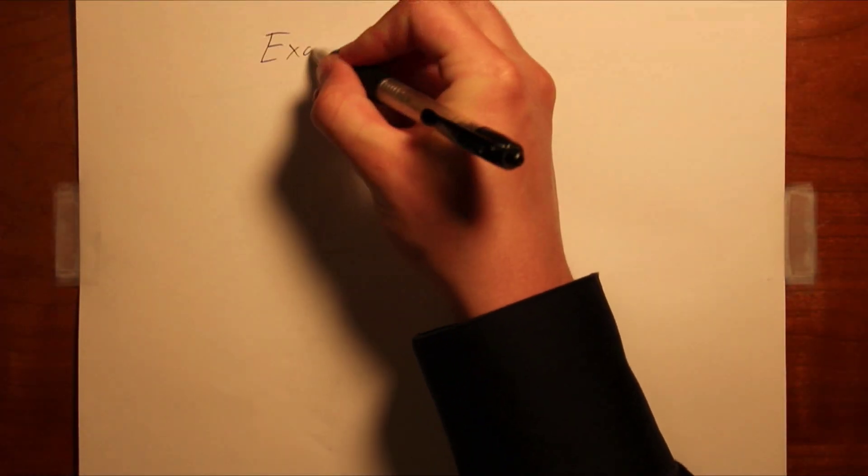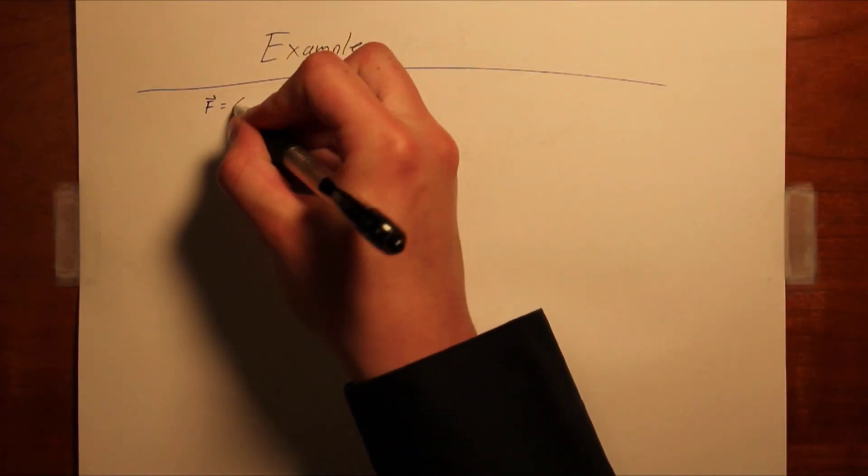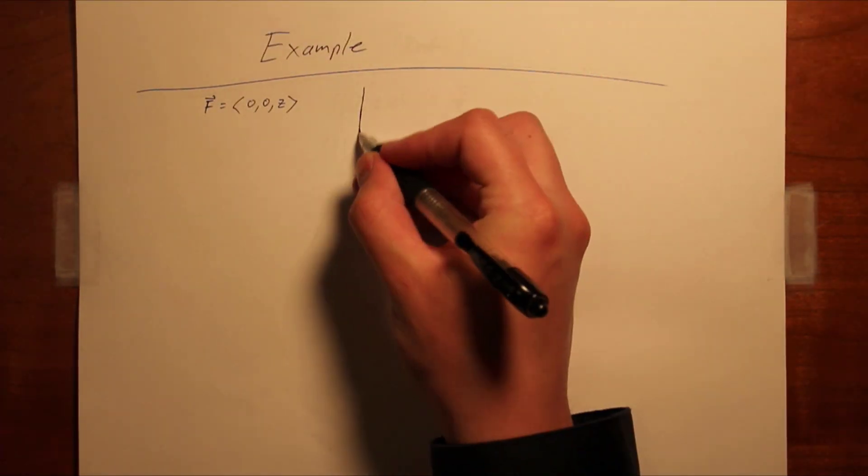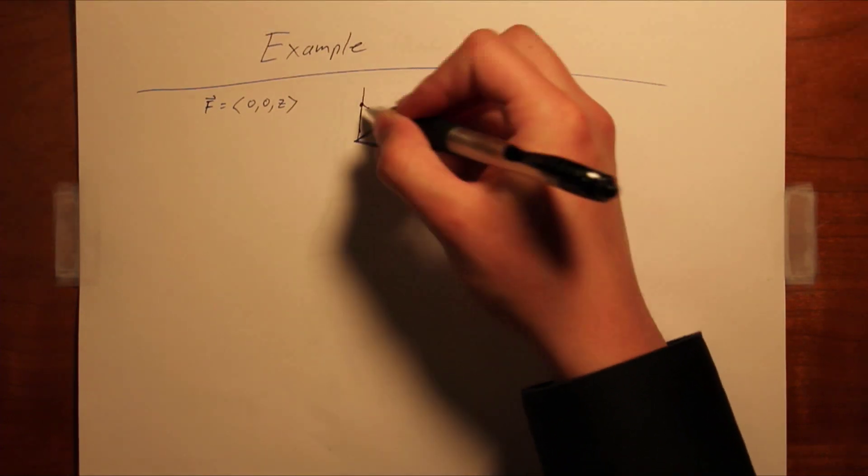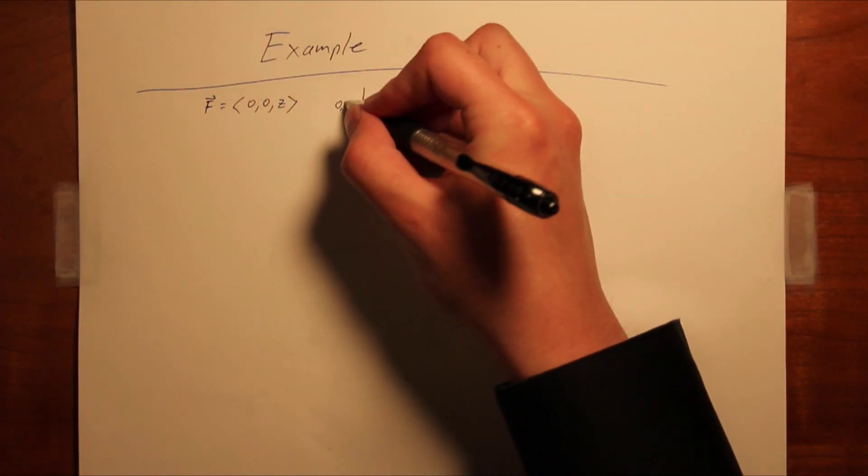To finish up, let's consider a rather simple example. Given a vector field F equals 0, 0, z, what is the flux to the pyramidal surface bounded by the xy, yz, and xz planes, and the plane passing through 1, 0, 0, 0, 1, 0, and 0, 0, 1?